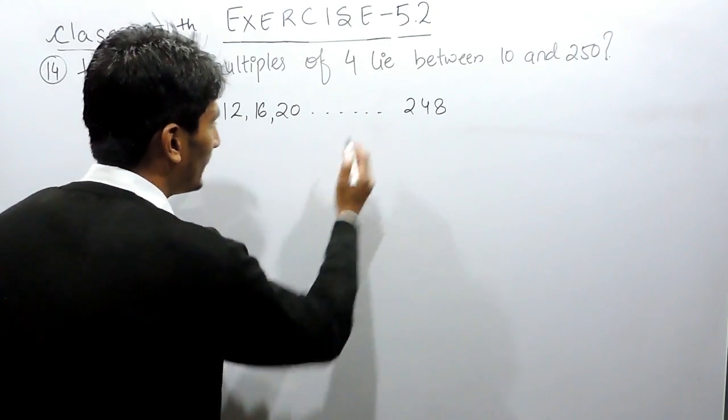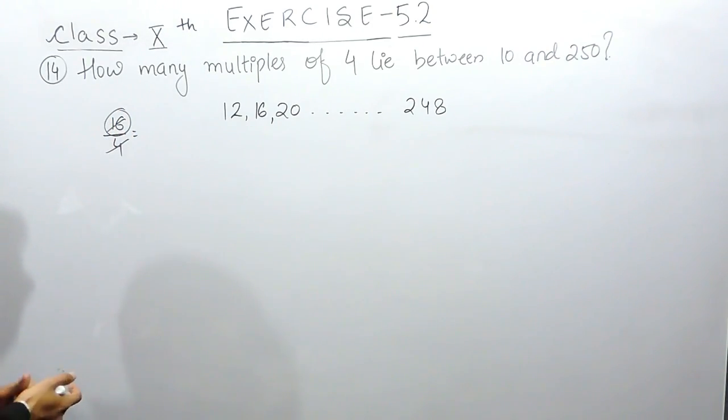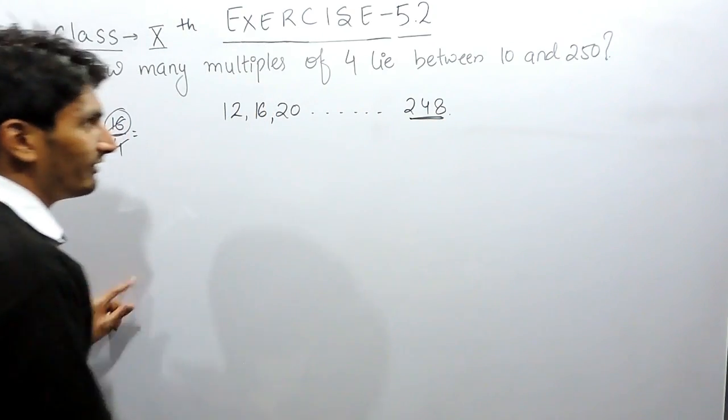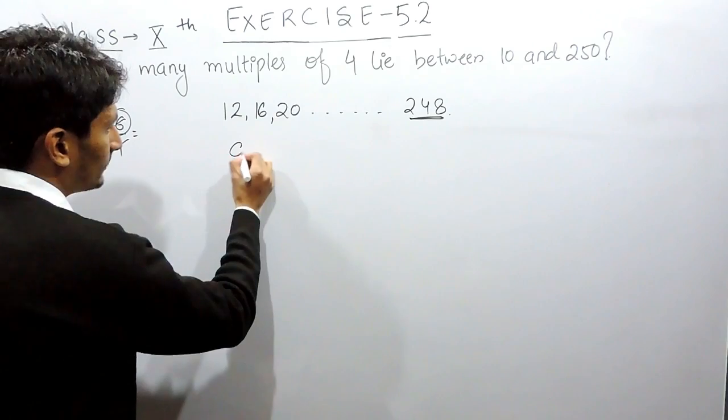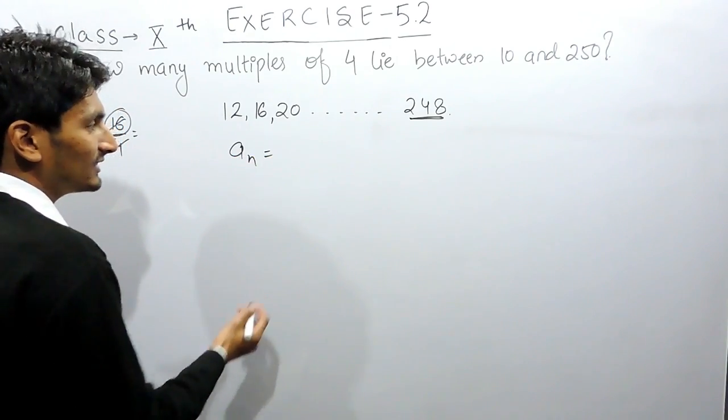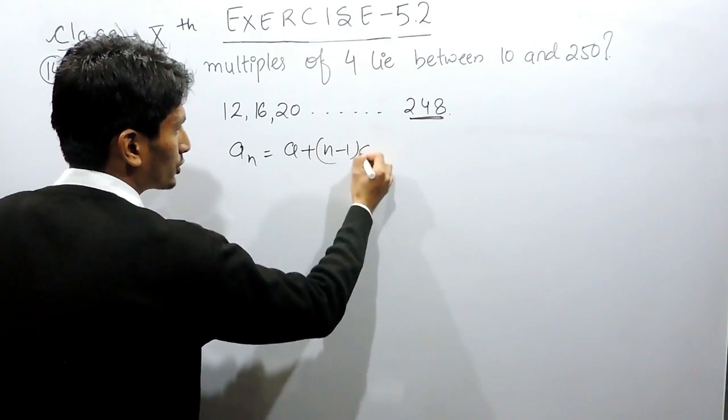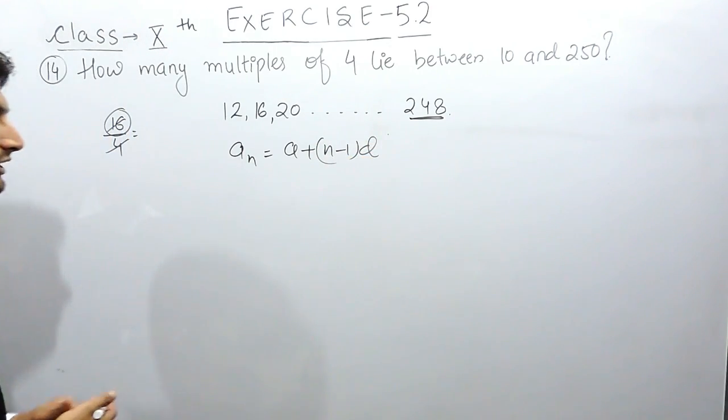Obviously, this is an AP and we can use the formula for AP. You have to find the number of terms when the last term is given to you. And we know how to find the nth term. For that, we have a formula.